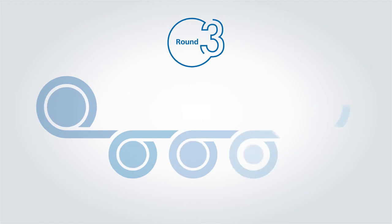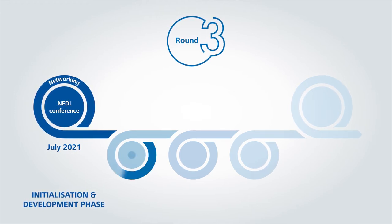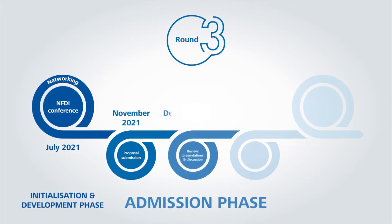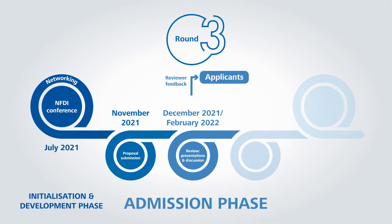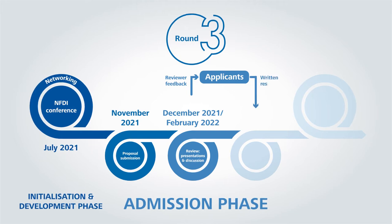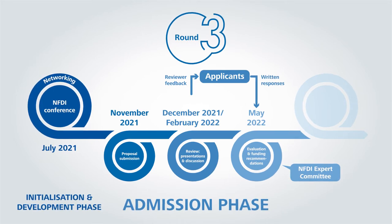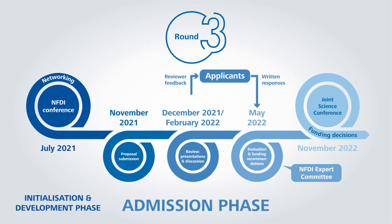The following diagram explains the selection process for round three. The third phase began with the NFDI conference in July 2021, which aimed to enable networking between applicants and existing consortia. Full consortia proposals are submitted at the beginning of November 2021. The proposals are thematically clustered and assigned to different review panels. The outcomes of the panels — your reviews — will be communicated to the consortia, and they may respond to comments from reviewers. In May 2022, the Expert Committee will assess the proposals based on your votes and the responses of the consortia. Final funding decisions will be made in November 2022 by the Joint Science Conference.